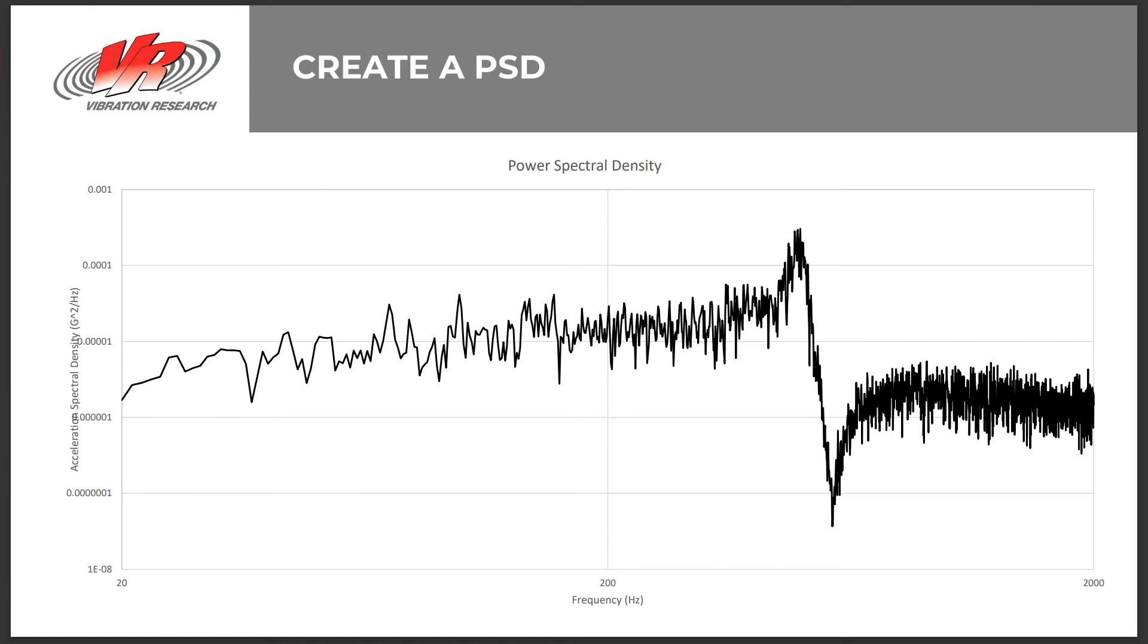The final step is to divide the averaged squared magnitudes by the sample rate. This normalizes everything to a single hertz and creates an acceleration spectral density or power spectral density graph. The acceleration unit is in G squared per hertz, and G squared is the squared magnitude of power, dividing by hertz to normalize on a single frequency. Using the PSD, I can clearly see the response of the product over a period of time.